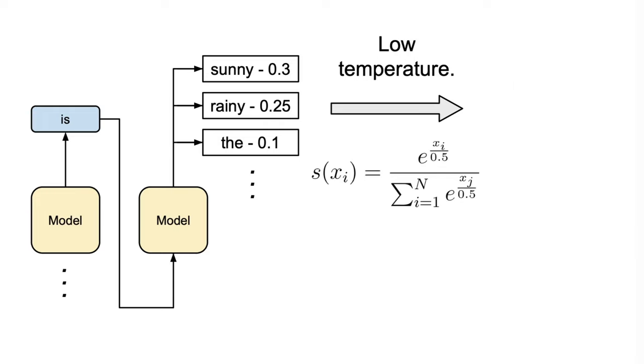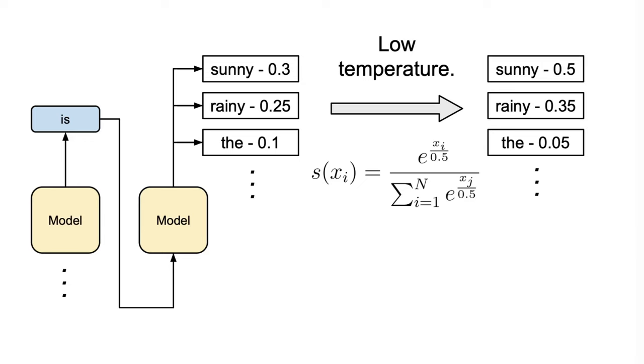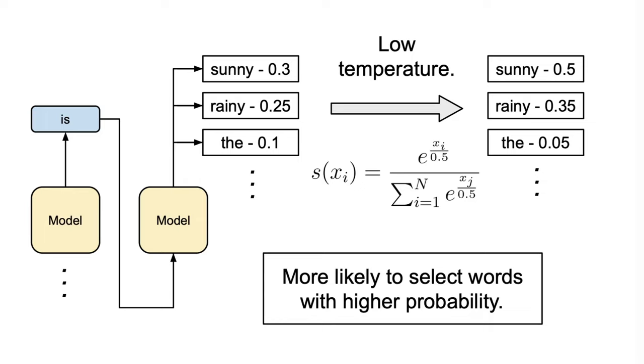Finally, if we decrease the temperature by setting the theta parameter to 0.5, we increase each vector's probability, because the exponential function takes more extreme values if the input has a higher value, making it more likely to select the most probable word, which is 'sunny.' Moving on to top-k sampling.